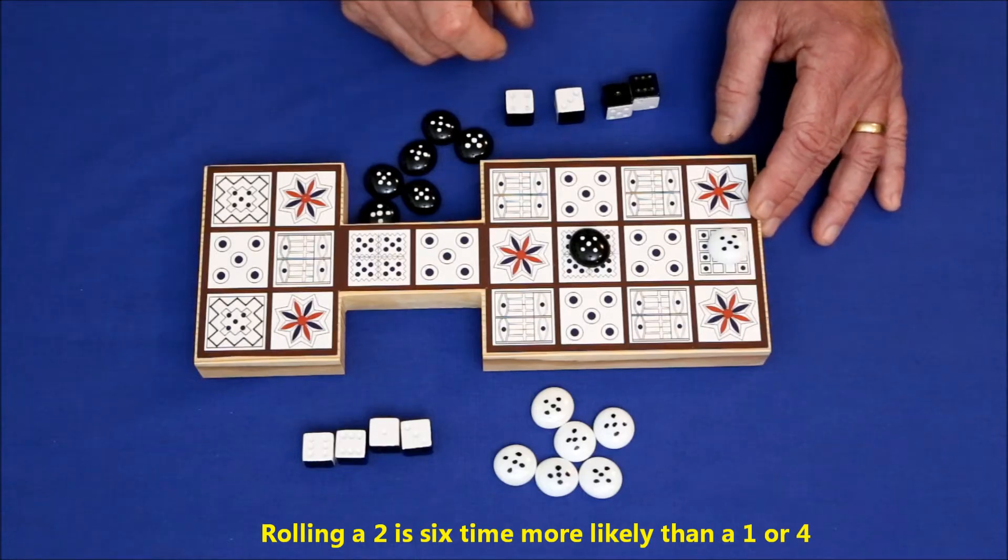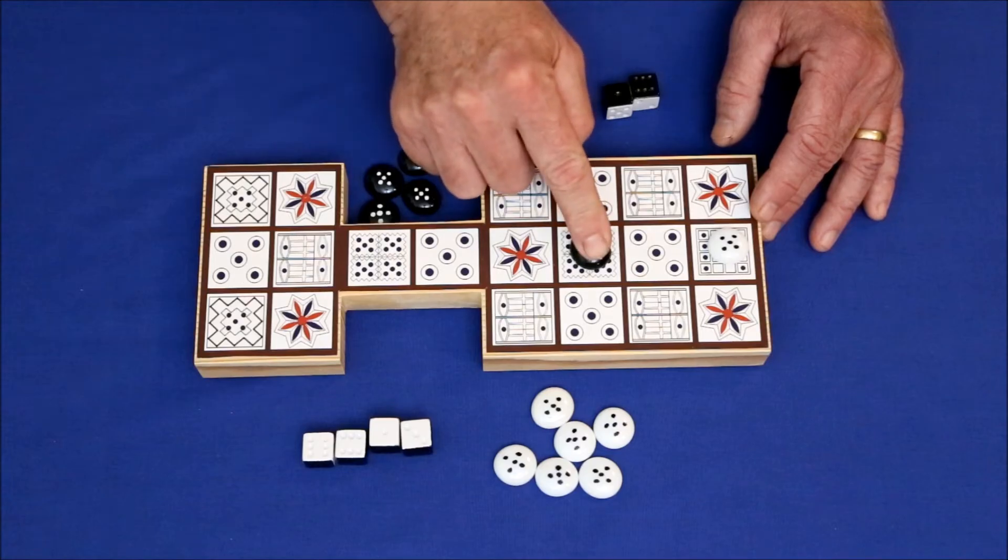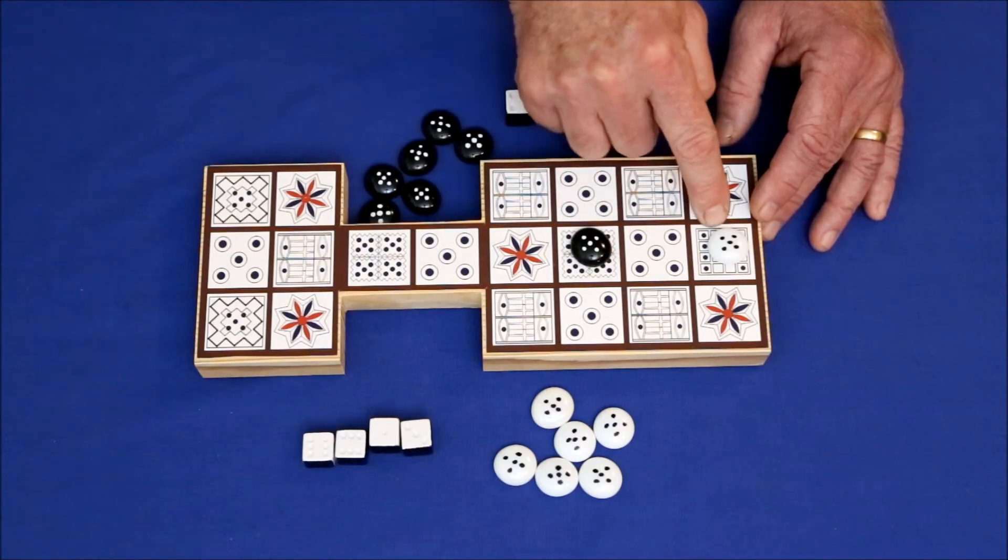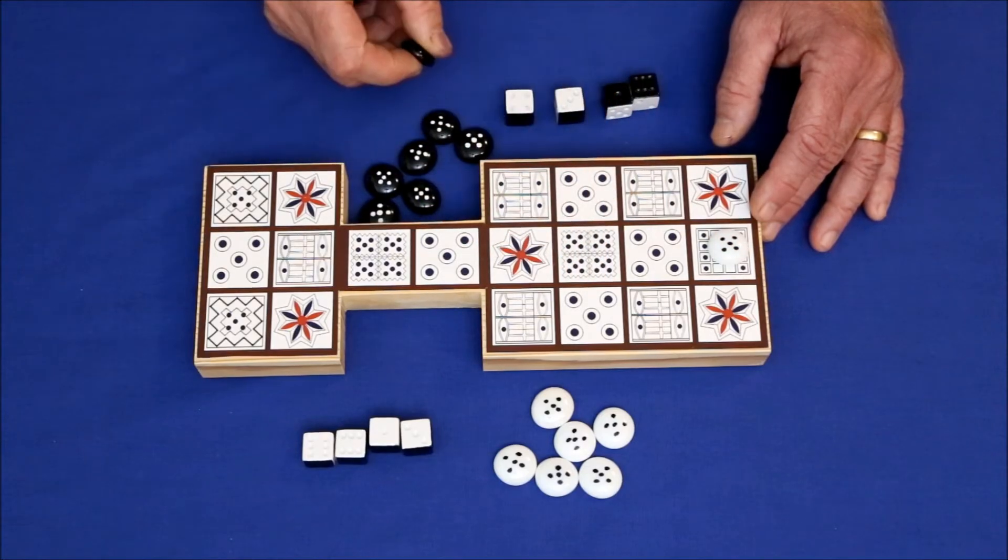Knowing this gives a player an enormous advantage because he or she knows to avoid placing a piece two in front of an opponent's piece because it's almost certain this guy's going to roll a two and knock you home.